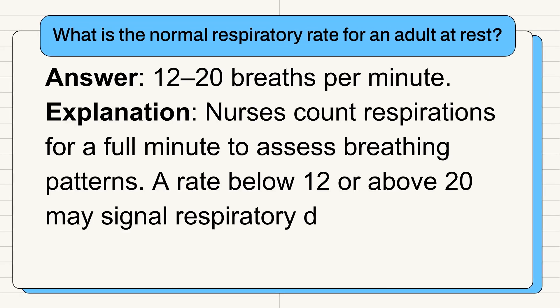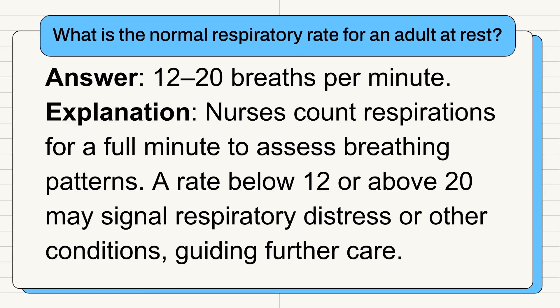Question 3: What is the normal respiratory rate for an adult at rest? Answer: 12 to 20 breaths per minute. Nurses count respirations for a full minute to assess breathing patterns. A rate below 12 or above 20 may signal respiratory distress or other conditions, guiding further care.